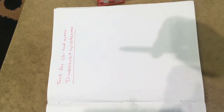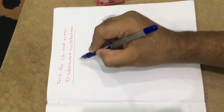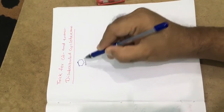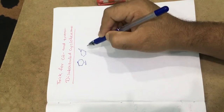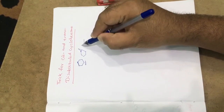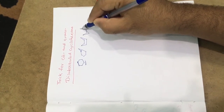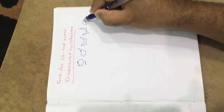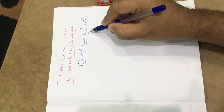Today I want to discuss a trick for cis and trans disubstituted cyclohexane. Cyclohexane generally exists in several conformations: half chair form, boat form, twist boat form, and chair form. Among all these, the chair form is the most stable form.